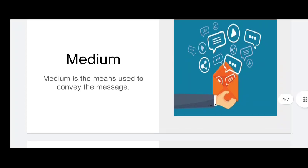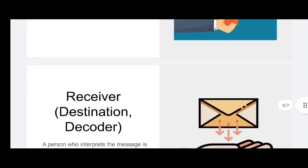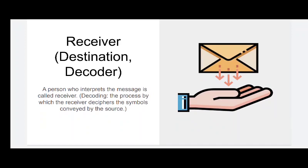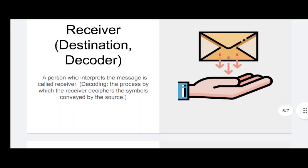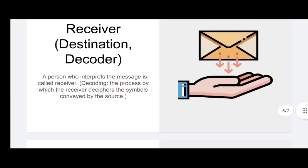Now, what is receiver? We can also say it is the destination or decoder. A person who interprets the message is called the receiver. Decoding is the interpretation of data — what data is received will be interpreted by the receiver, and that is called decoding of the data.